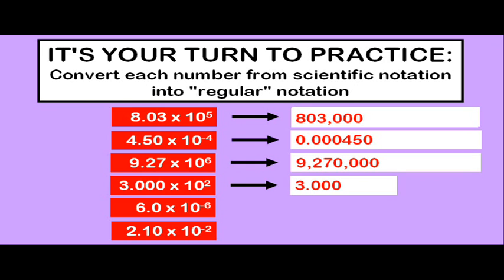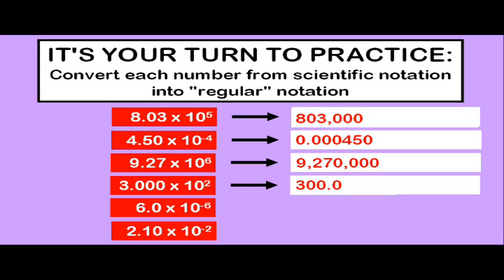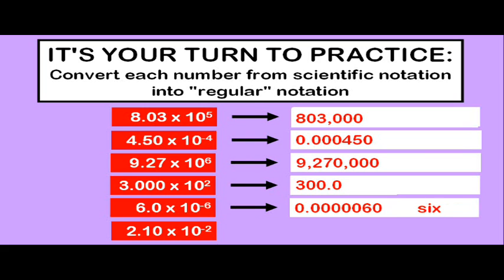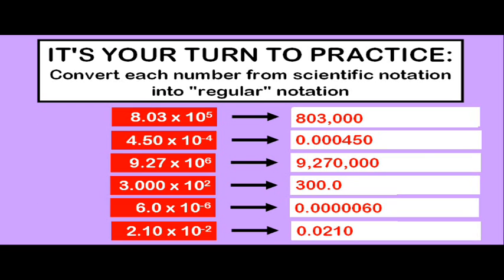In our next example, we have four significant digits, which I do not get rid of. When I write this in regular notation, I still keep all four significant digits. So, if you thought the answer was 300, it's actually supposed to be 300.0. Again, the issue of significant figures will be discussed in more detail. Our next example is going to be a smaller number as we move the decimal to the left, six places. And that is our answer. And finally, we have a number that becomes smaller. As we move the decimal to the left, two places, the answer is 0.0210.